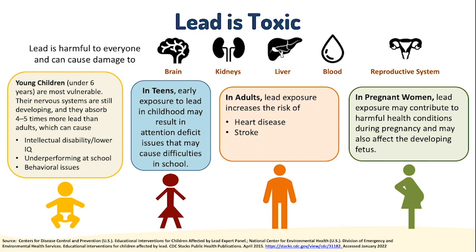At the top of the slide are graphics of the organs in the body that may be harmed by lead exposure. These organs include the brain, the kidneys, the liver, the blood, and the reproductive organs. Underneath the graphics are square boxes with text, and below those are graphics representing a baby, a teenager, an adult, and a pregnant person. Lead exposure is harmful to everyone and affects multiple organs in the body, including the brain, kidneys, liver, blood, and reproductive systems.